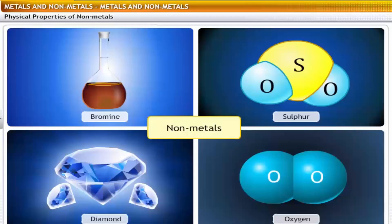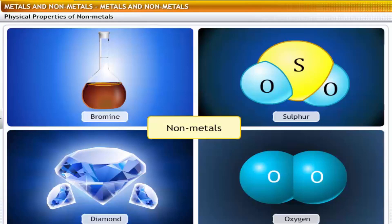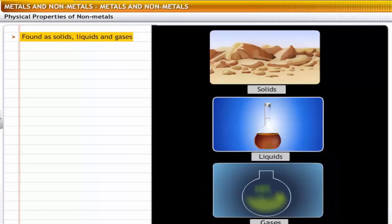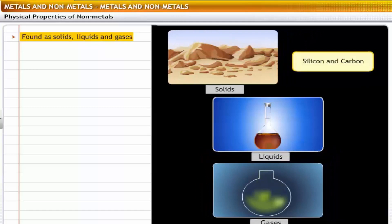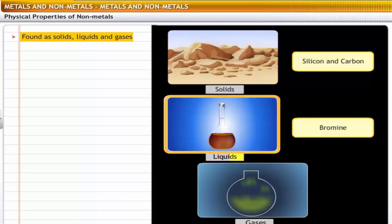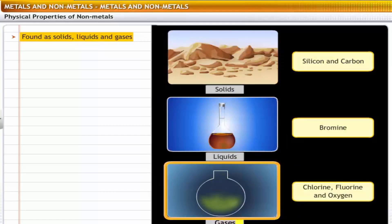Non-metals show properties that are unlike metals — they don't possess metallic properties. Let's look at the common properties of non-metals. Non-metals exist as solids, liquids and gases. For example, silicon and carbon are solids, bromine is a liquid, and chlorine, fluorine and oxygen are gases.